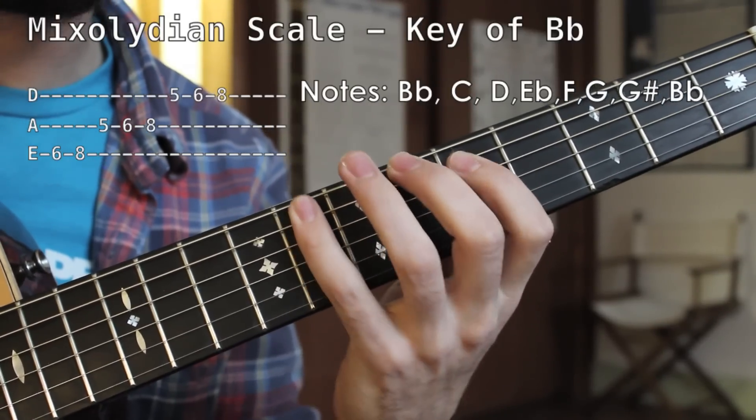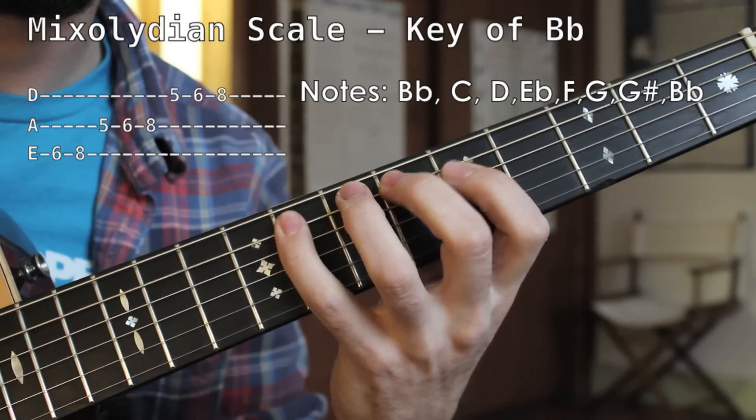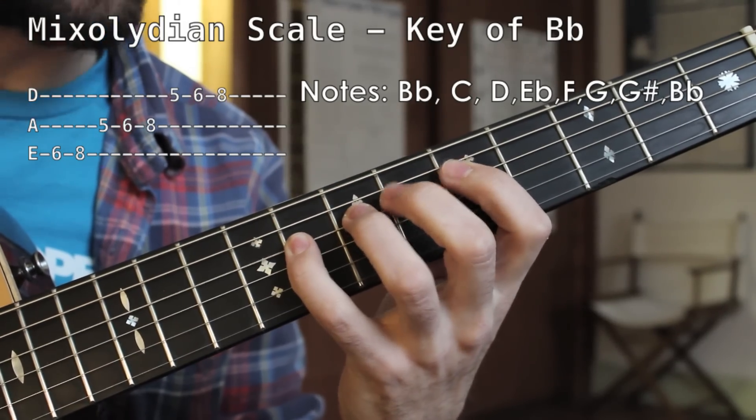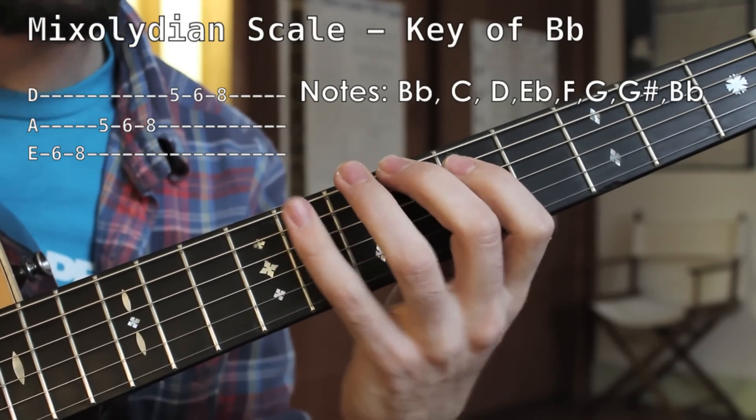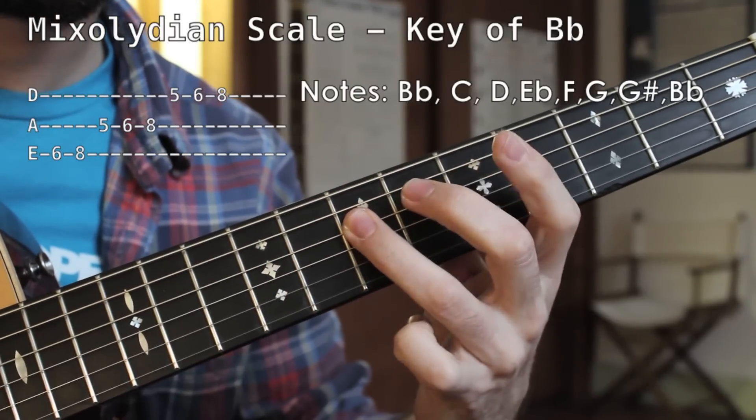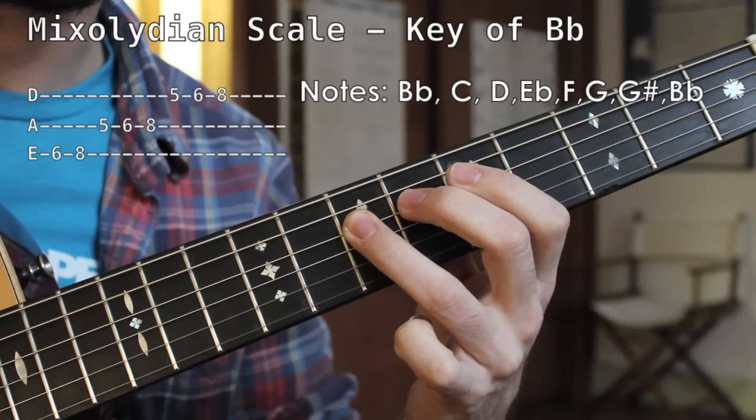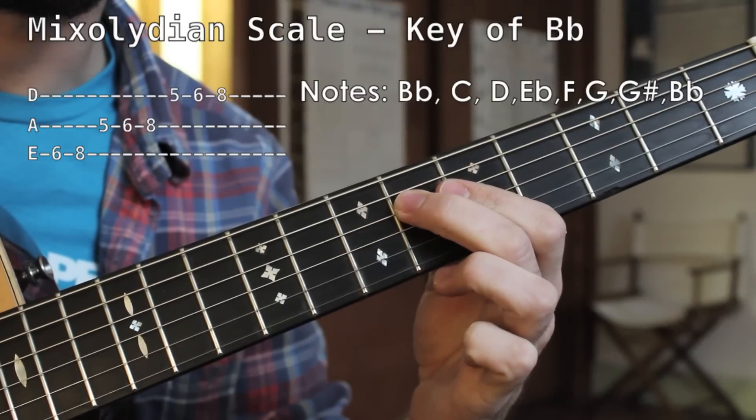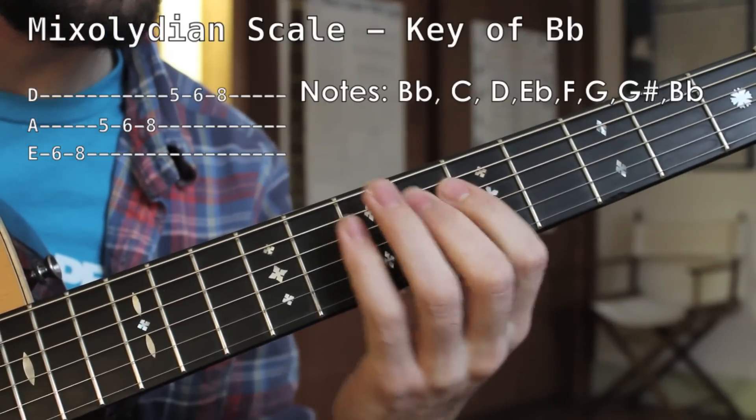All right, anybody that knows their major scale would recognize that it's pretty much the same exact thing, only that seventh note in the scale is flatted back one fret to what's called the dominant seven.